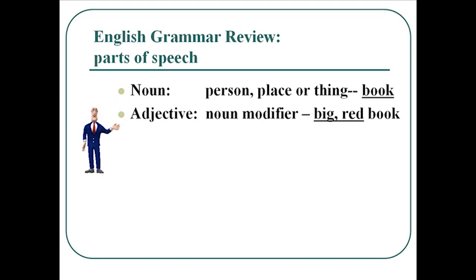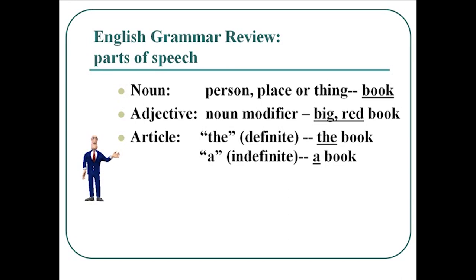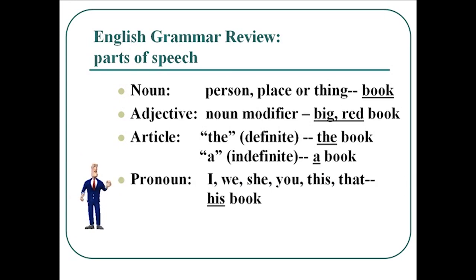An adjective is a noun modifier — so we have the big book or the red book, with big and red modifying book, telling you what type of book it is. The article: we have a definite article in English, so we would say the book. And then we have an indefinite article, which Greek doesn't have, which is a book — the difference between the book, which is particular, and a book, which is more general. The pronouns are varied. We have personal pronouns like I, you, we, she, it, they; demonstrative pronouns like this and that; relative pronouns like who and which. So his book — the his is a pronoun.